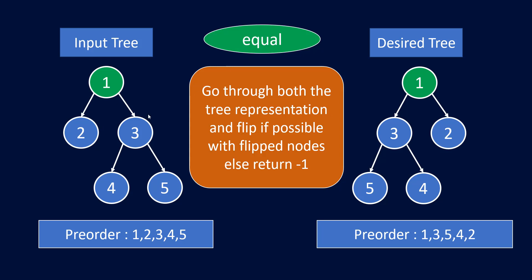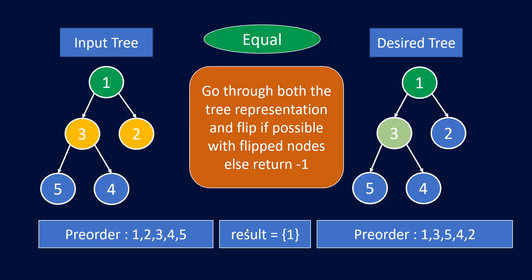If this left is equal to the left of the desired tree then we can move ahead with our basic DFS, or else we need to flip these two nodes. As this is not equal we are going to flip this and add one into our result because we have flipped the nodes that were left and right to one. Once we are done with this, since we were on one, we need to perform the pre-order traversal on the input tree also.